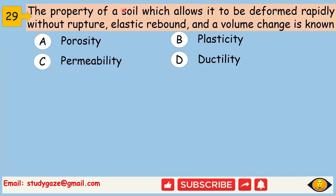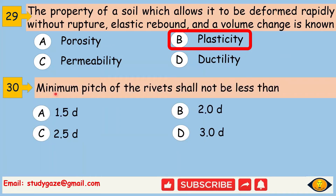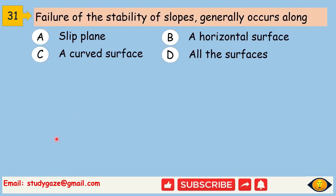The property of a soil which allows it to be deformed rapidly without rupture, elastic rebound and volume change is known as plasticity. Next, minimum pitch of the rivet shall not be less than 2.5D. Next, failure of the stability of slopes generally occurs along a curved surface.